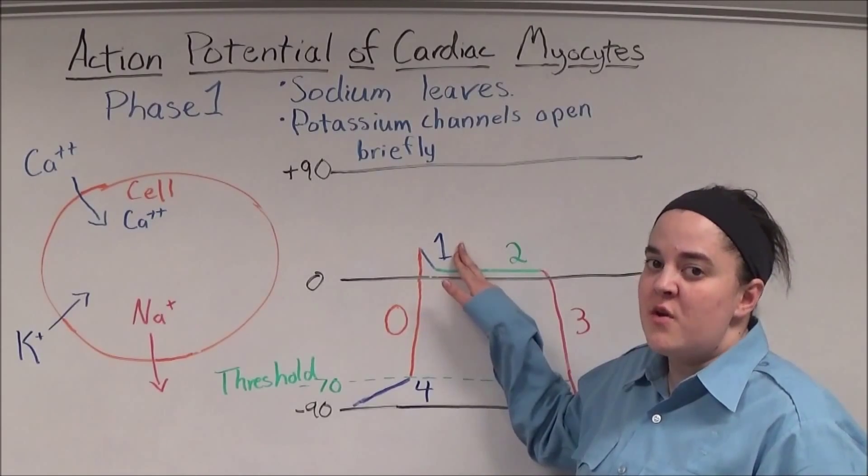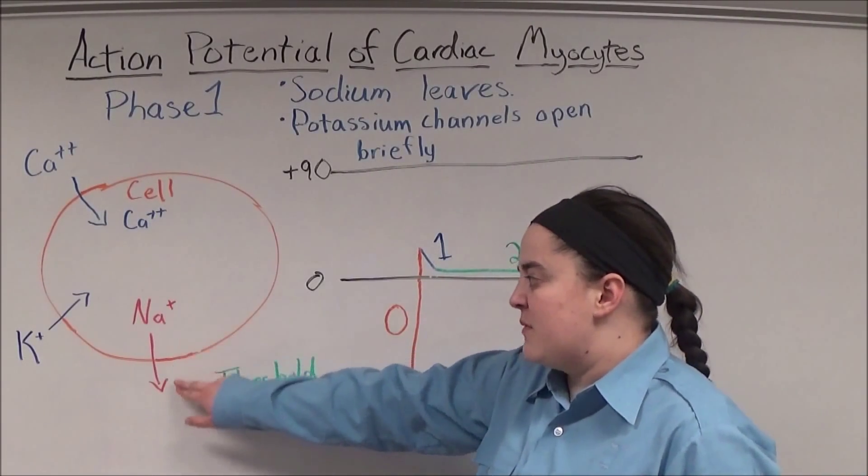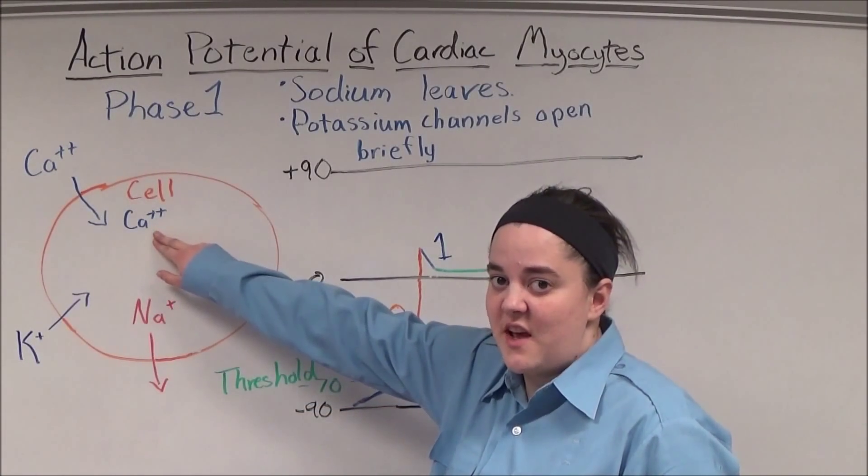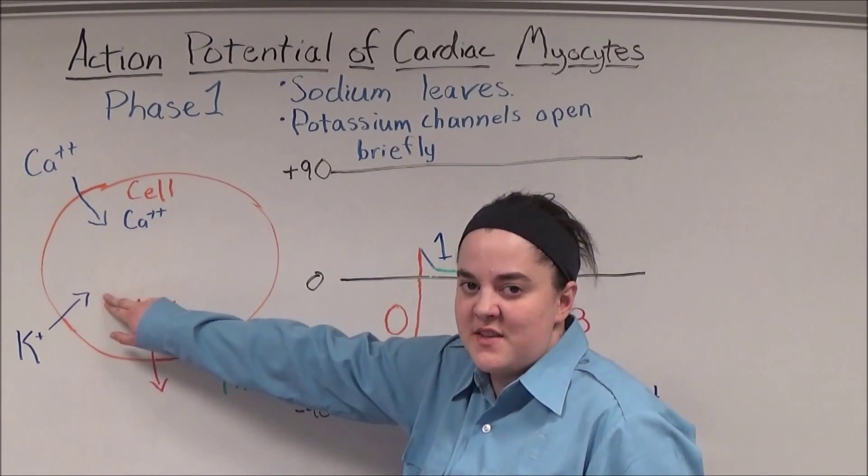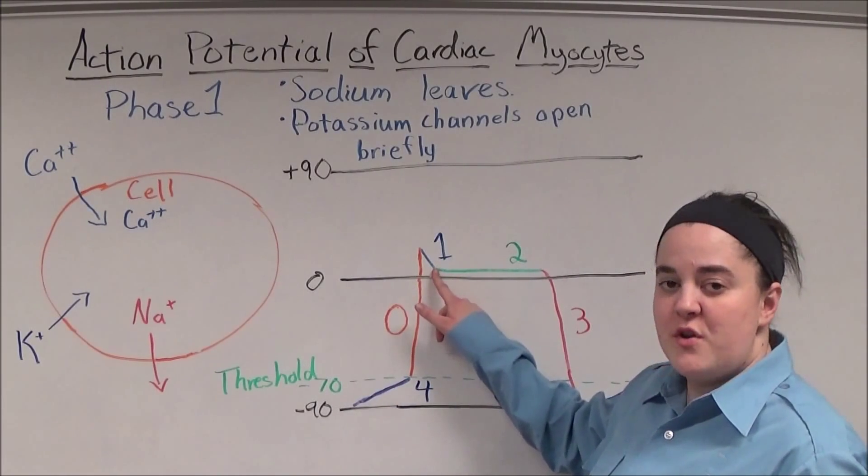Phase one is also known as early repolarization. During phase one, sodium is pumped out of the cell, calcium continues to enter the cell, and potassium channels open briefly, allowing some potassium into the cell, which causes the action potential to become more neutral.